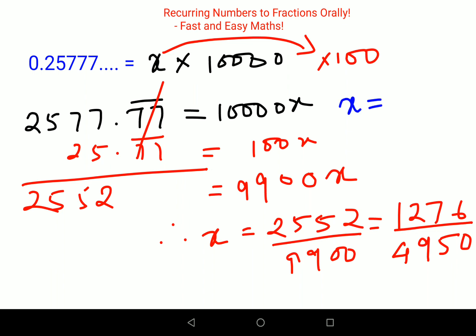Again, I can reduce this further. So your next reduction will get you the final answer, which will be 638 upon 2475. So that's it. This is your final answer for this particular recurring number.